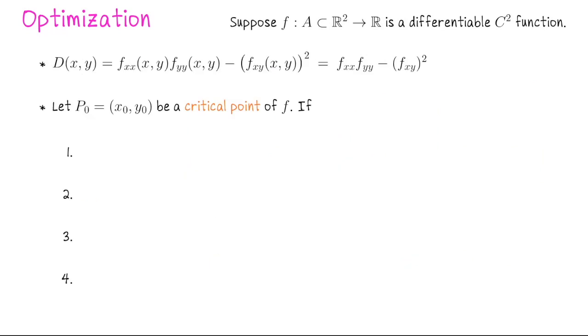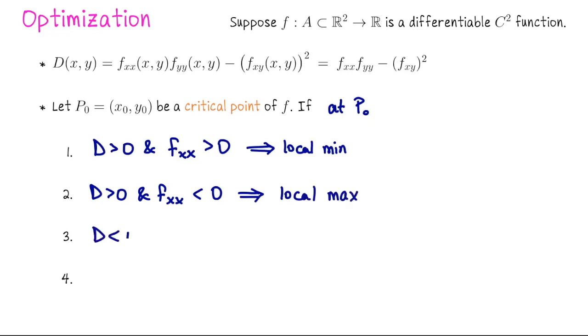What we do is we take a critical point of f, so that would happen at some fixed x value and y value, and we evaluate D at that point. If at that point the quantity D is positive and f_xx is positive, this tells us that we're looking at a local min. If on the other hand, D is positive and f_xx is negative, we're looking at a local max. If D is negative, you're done with the test. It's a saddle point. There's one possibility we've left off, and that is that D is zero, in which case this test is inconclusive.